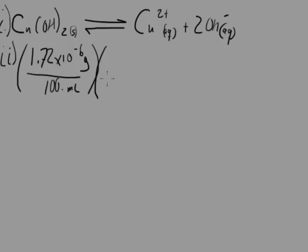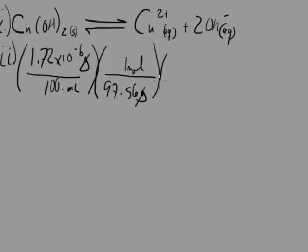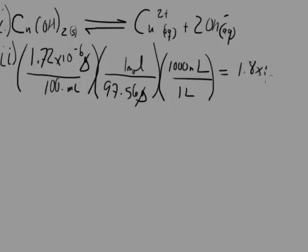The molar mass of copper 2 hydroxide is 97.56 grams per one mole. With grams canceling out, that gives us moles per milliliter, but we want moles per liter. We'll make a quick conversion knowing that there are 1,000 milliliters in one liter. When we calculate the answer, we find that it's 1.8 times 10 to the negative 7th moles per liter. That's the answer to part II.